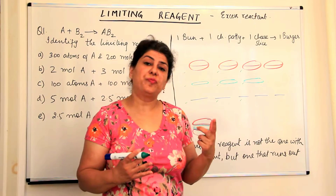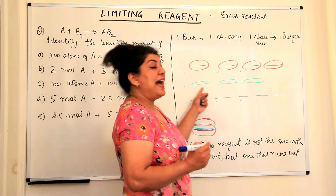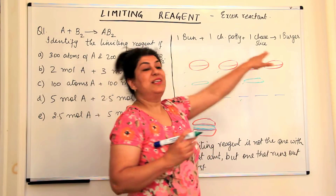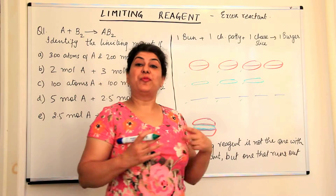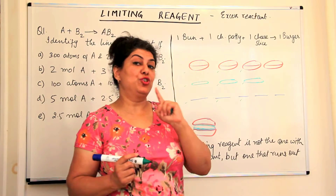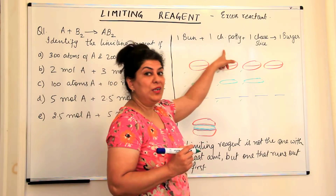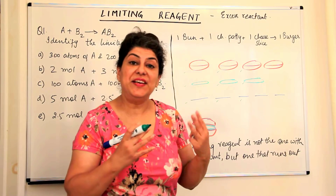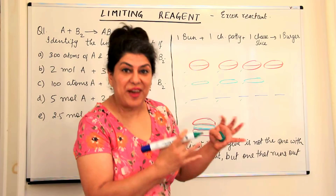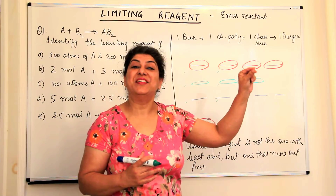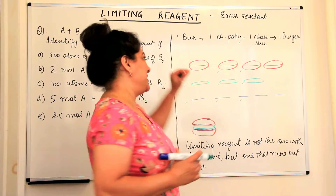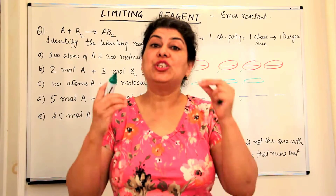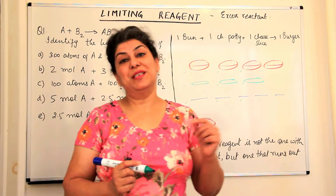If we assume this to be a chemical reaction, and assume that the bun, chicken patty, and cheese were the reactants and the burger was the product — for every one burger to be formed, I would require one bun, one chicken patty, and one cheese slice. Since I had only three chicken patties, this was the ingredient that ran out first. Since it ran out first, I would call this the limiting reagent or the limiting reactant. That reactant which runs out first is known as the limiting reagent.